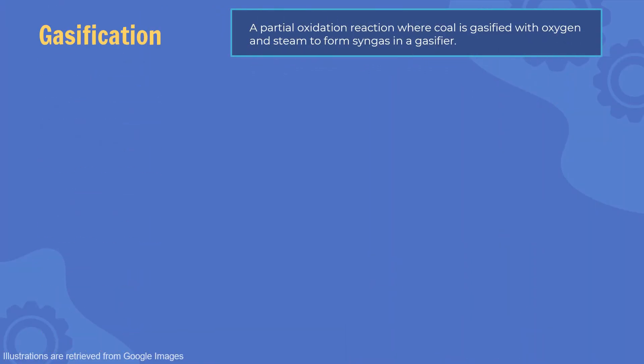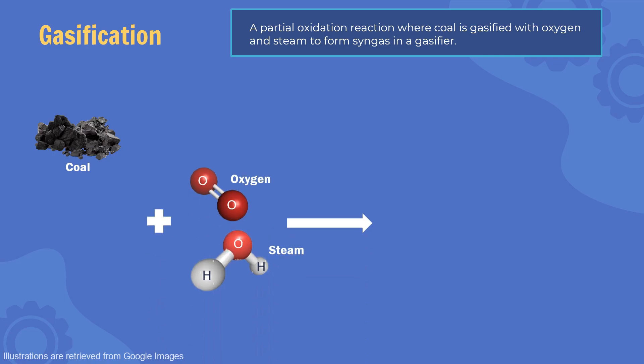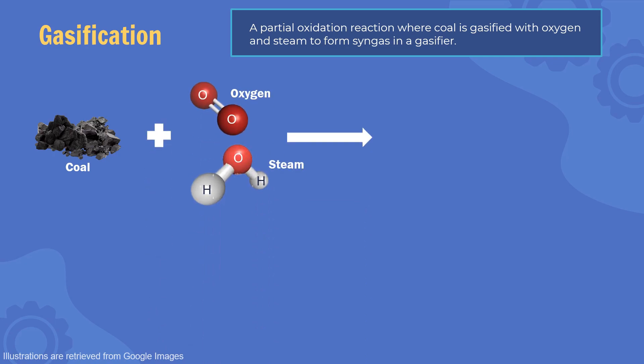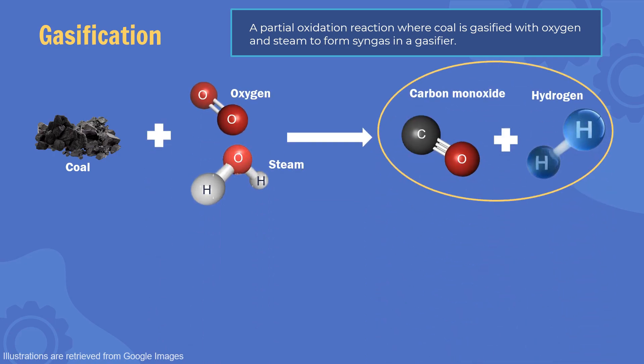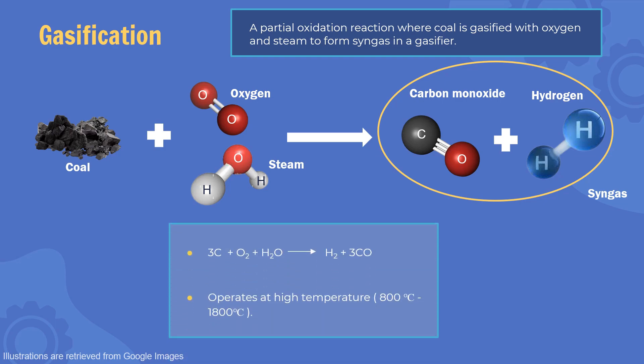Gasification is a partial oxidation reaction where coal is gasified with oxygen and steam to form carbon monoxide and hydrogen, the main composition of syngas. The process operates at around 800 to 1800 degrees Celsius.